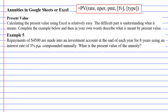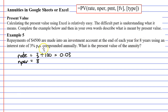Looking at our formula, we'll start with our rate. Our rate is 3% compounded annually, so we don't need to divide by 12 or 26, but we do divide by 100 to convert it to a decimal: 0.03. Next on our formula we have NPER, the number of time periods, which is 8 years — done yearly, so no further calculations needed.